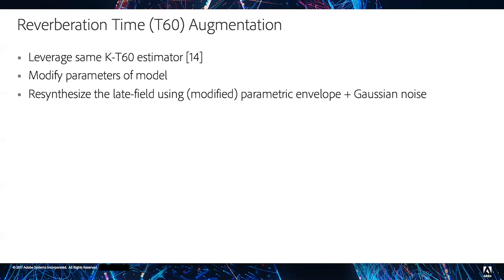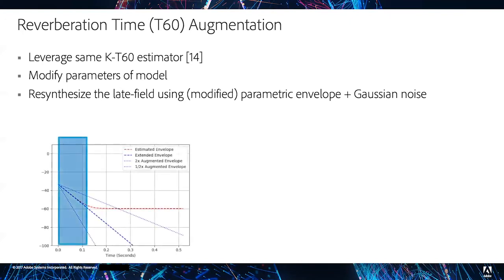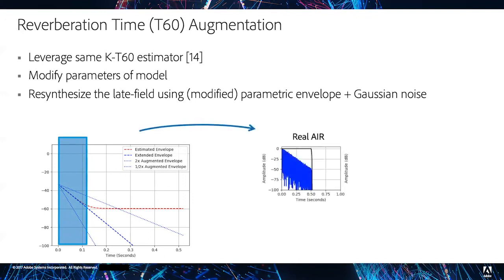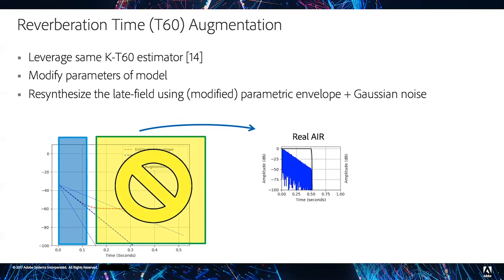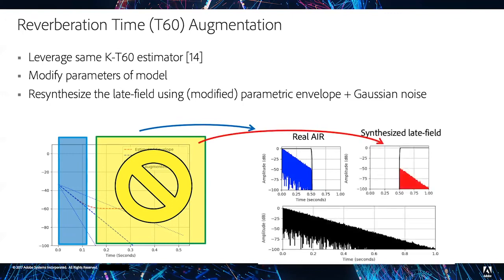If we look closer, we first extract the early reflections or the beginning of an impulse response. Then we extract the late field, set the noise floor envelope to zero, change the T60 to our liking, and then use shaped Gaussian noise and impose the manipulated envelope to resynthesize the late field. Finally, we simply crossfade the early part and synthesized late field parts of the impulse response together to form the final result as shown in black.